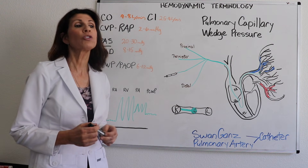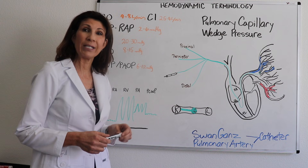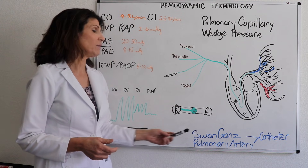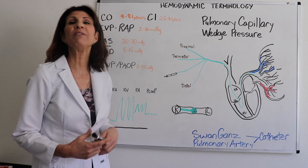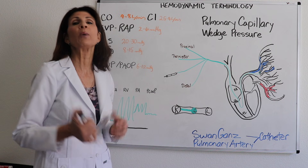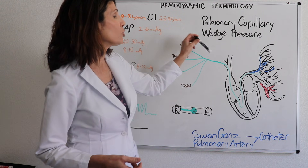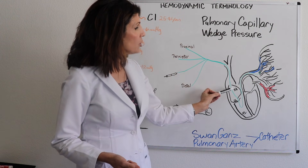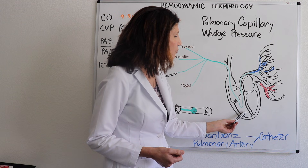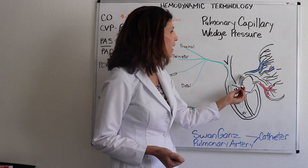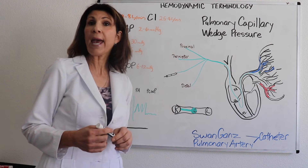The last hemodynamic parameter is the pulmonary capillary wedge pressure (PCWP), also called the pulmonary artery occlusive pressure. To get that value, you need an invasive device called a Swan-Ganz catheter, invented by two gentlemen named Swan and Ganz — also called the pulmonary artery catheter. This catheter is inserted into the internal jugular, threaded through the right atrium, through the tricuspid valve, to the right ventricle, through the pulmonic valve, and into the pulmonary artery.